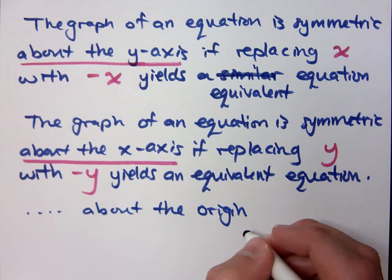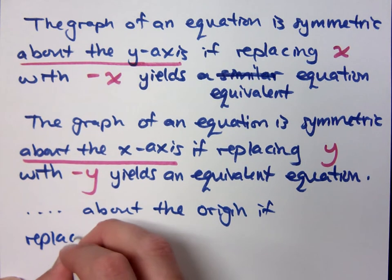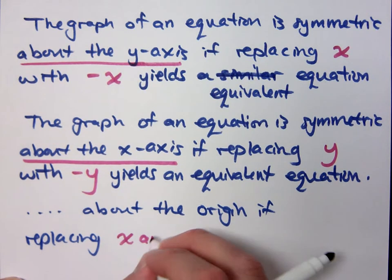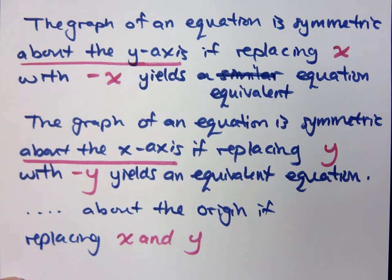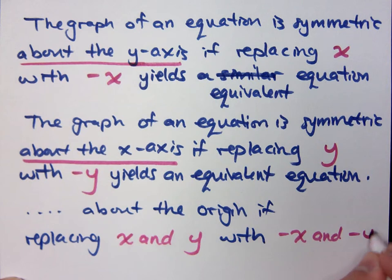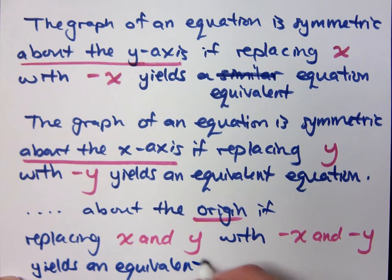Let's talk about origin symmetry. If we're placing x and y with negative x and negative y yields an equivalent equation.